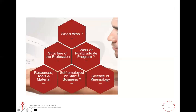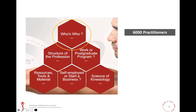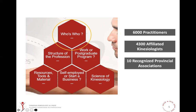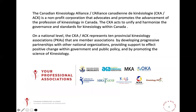Let's dive in, starting with the first pillar, the Who's Who section. In this section, we outline how kinesiology is represented across Canada from a national level at the CKA to a provincial level at the various PKAs and everything in between. Did you know, in Canada, there are over 6,000 practicing kinesiologists, of which 4,300 are members of their provincial professional associations, namely the 10 provincial kinesiology associations, referred to as PKAs, and therefore also members of the Canadian Kinesiology Alliance. The CKA is a non-profit organization representing the 10 provincial kinesiology associations that are member associations.